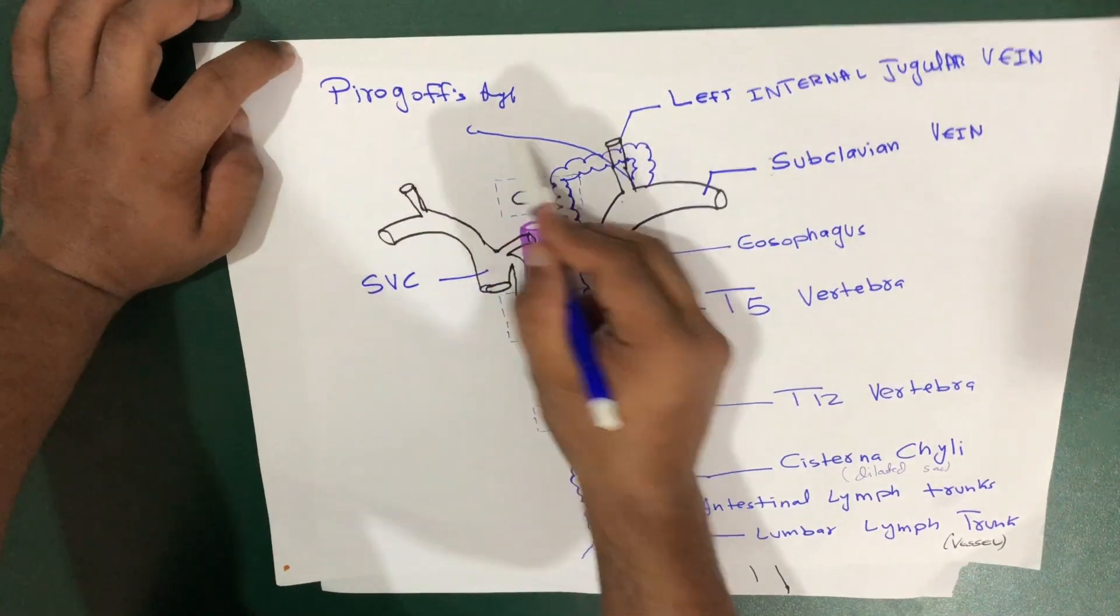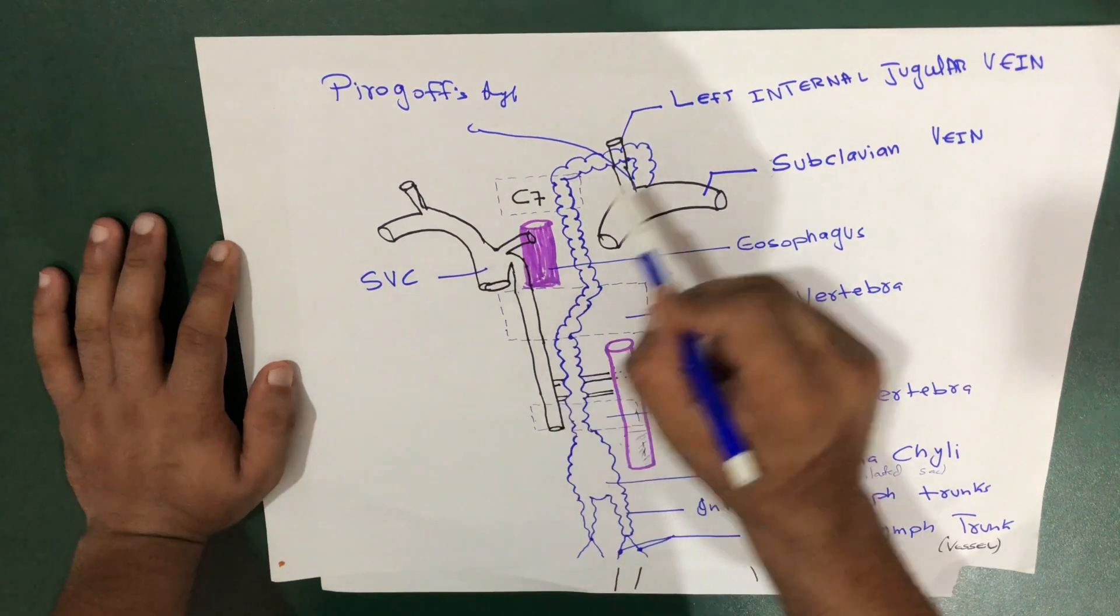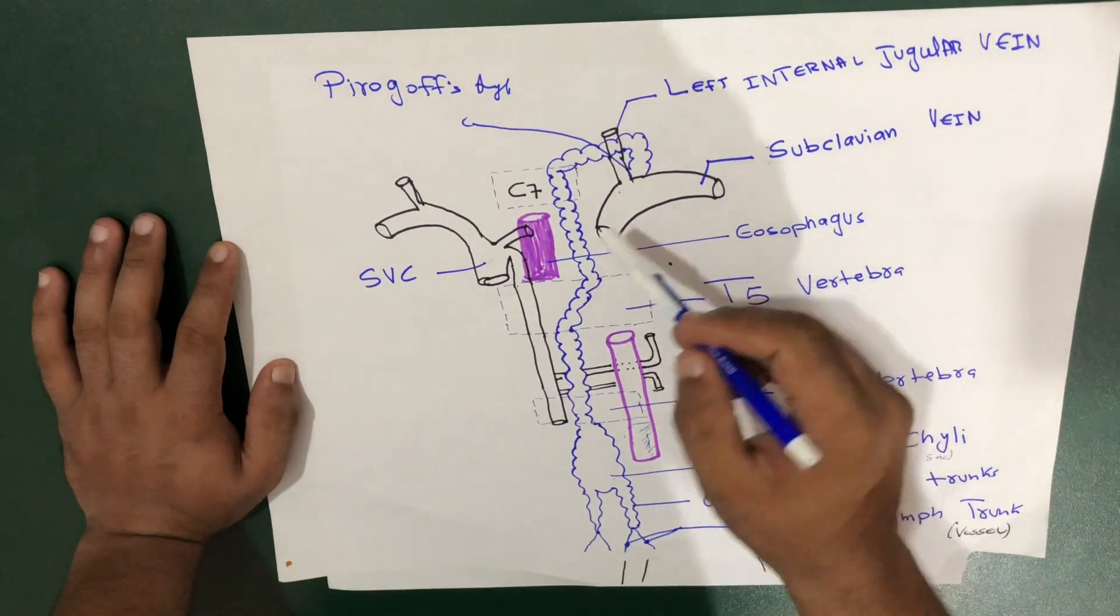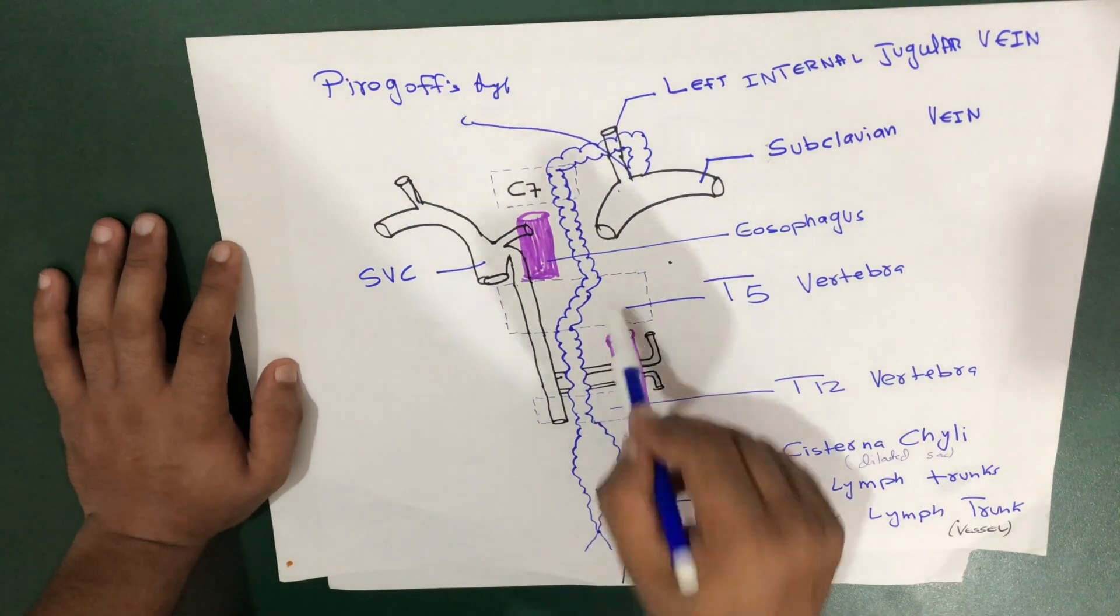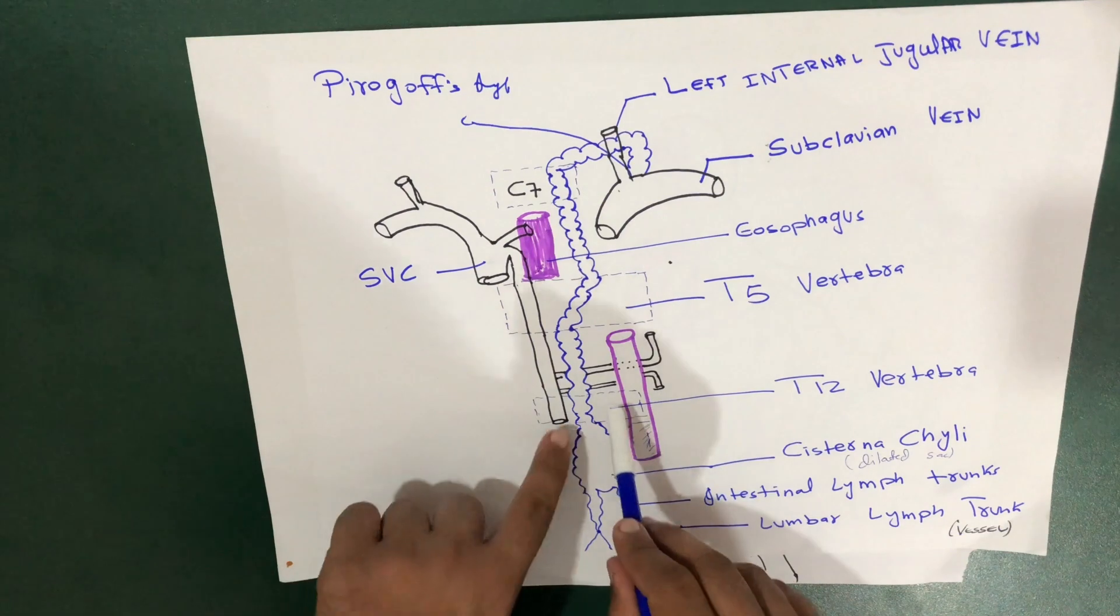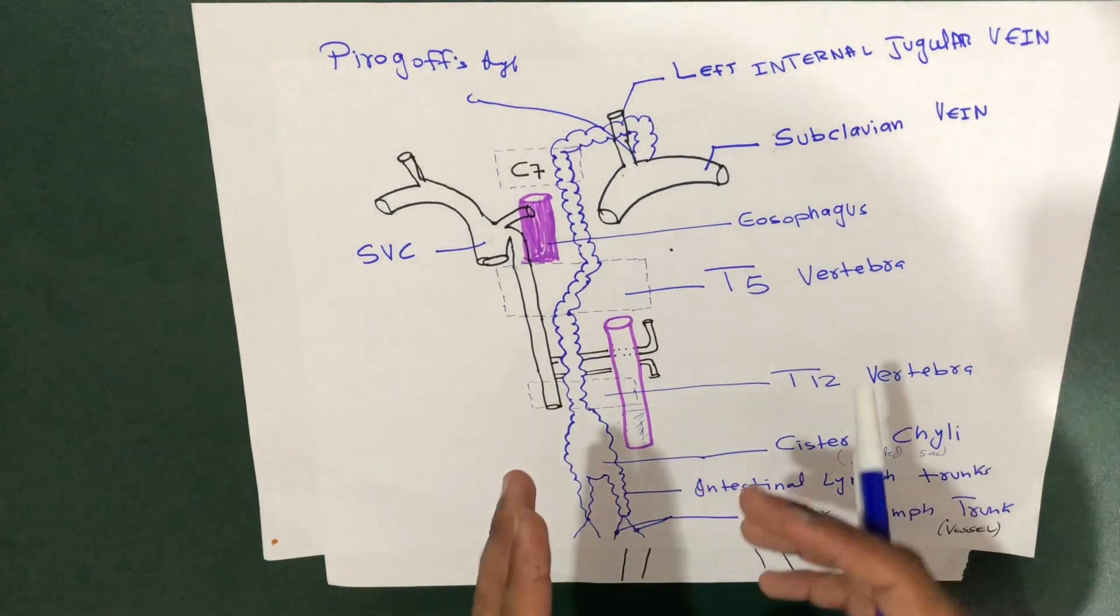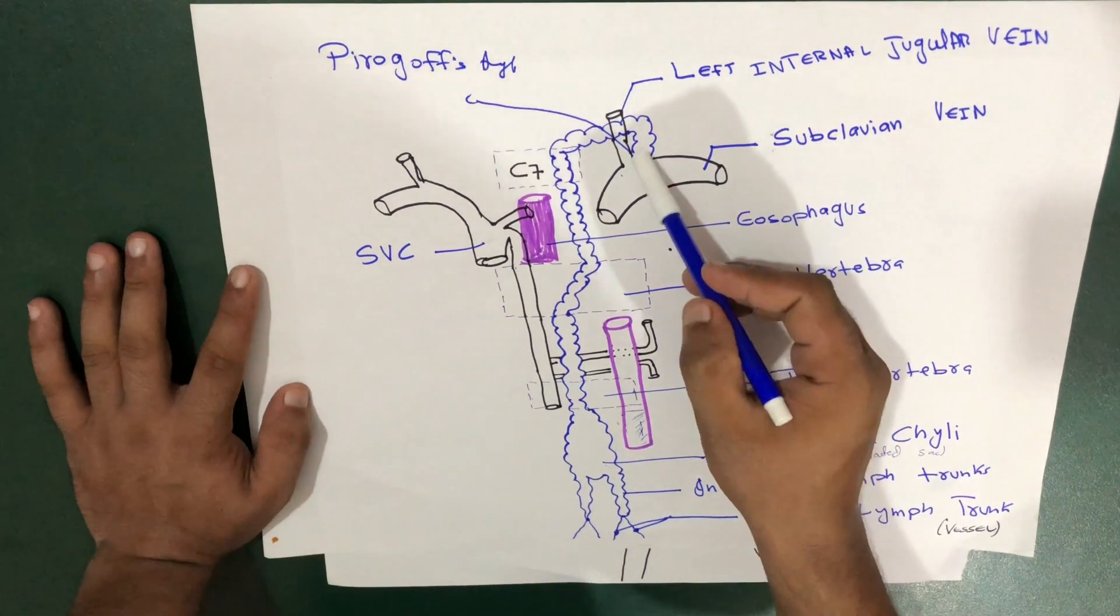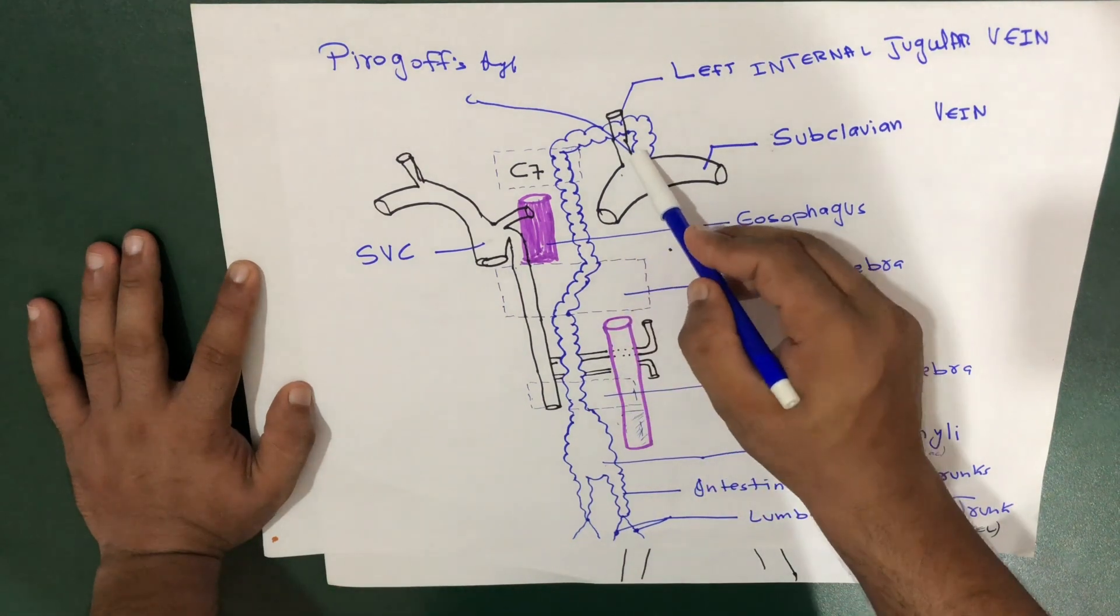At which level does the thoracic duct end? C7. At which level does it turn? T5. At which level does it start? T12. This is the basic concept of the thoracic duct. It drains at Pirogov's angle and reenters the systemic venous circulation.